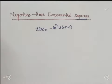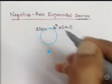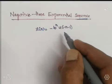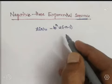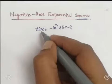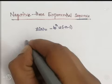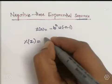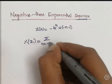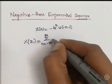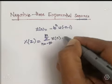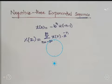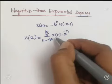Let us consider a negative time exponential sequence defined by X(n) = -B^n · u(-n-1). The Z-transform of the sequence X(n) is given by the definition: X(Z) = summation from n = -∞ to +∞ of X(n) · Z^(-n).